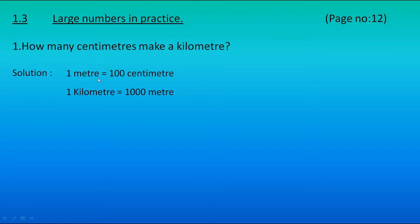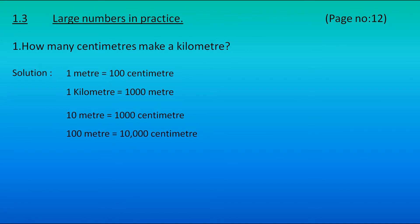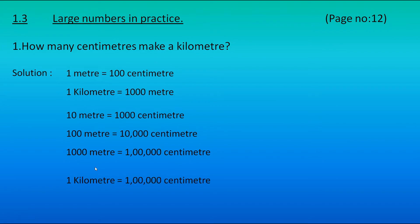Since 1 meter is equal to 100 centimeters, let's multiply both sides by 10. We get 10 meters is equal to 1000 centimeters. Multiplying again by 10 gives us 100 meters is equal to 10,000 centimeters. Multiplying once more by 10 gives 1000 meters is equal to 1 lakh centimeters. Since 1 kilometer is equal to 1000 meters, and 1000 meters is equal to 1 lakh centimeters, the answer is 1 lakh centimeters make a kilometer.